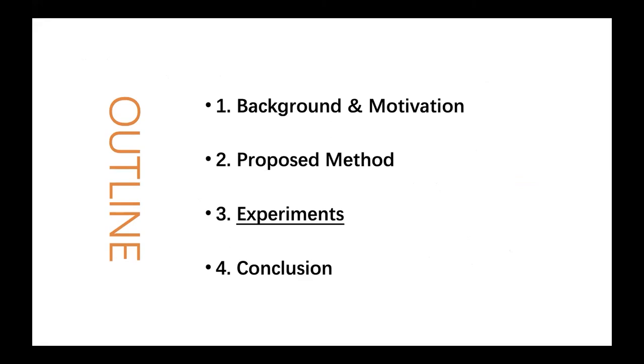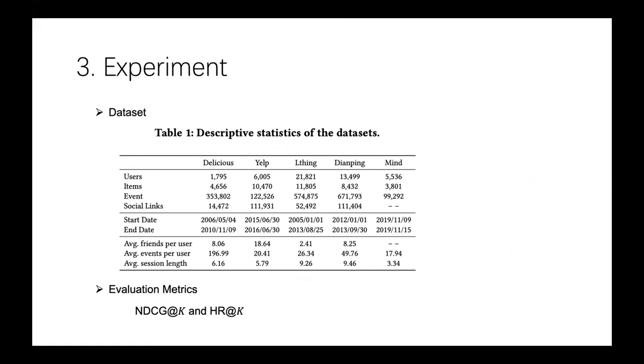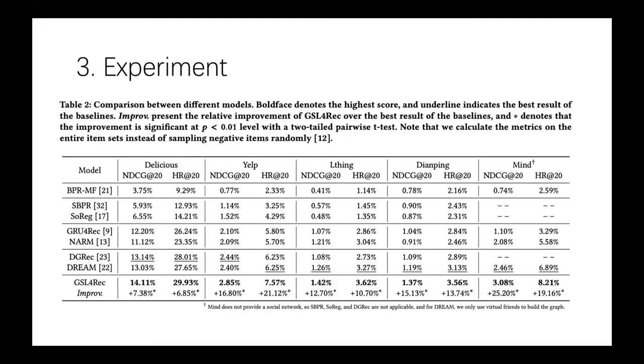To comprehensively study our proposed GSL4REC, we conduct experiments on five real-world datasets and we use NDCG and hit ratio as the evaluation metrics. Here shows the overall comparison between different models. We have the following observations. The graph-based methods, including our model, consistently outperform other methods. And GSL4REC outperforms both DGREC and DREAM, which demonstrates that a learned graph structure has more vital expressiveness to capture the dynamical dependency among users.